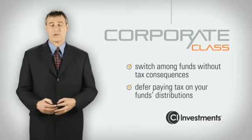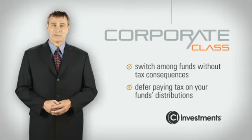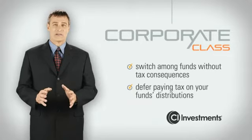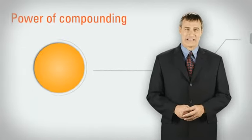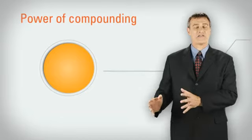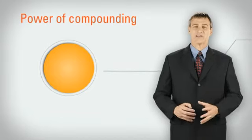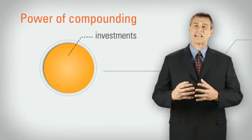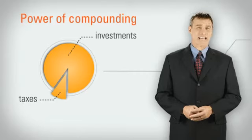and defer paying tax on distributions, given the low distribution payout strategy of CI Corporate Class. More importantly, without the ongoing tax burden, CI Corporate Class takes advantage of the power of compounding, because more of your money stays invested, and less goes to the taxman.